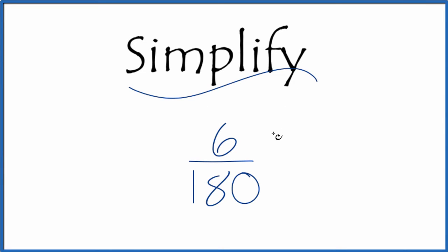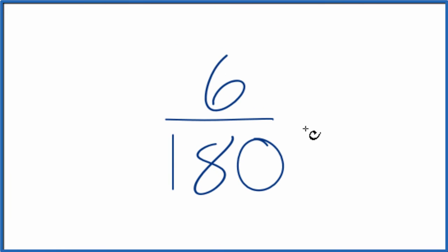Let's simplify the fraction 6 over 180. And what we're trying to do, we're just trying to find another fraction that's equivalent to 6 over 180, so we've reduced it to lowest terms.